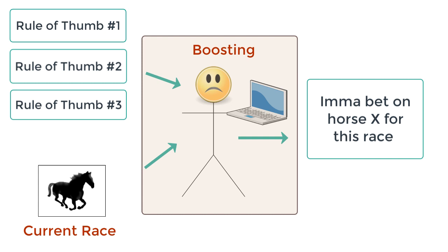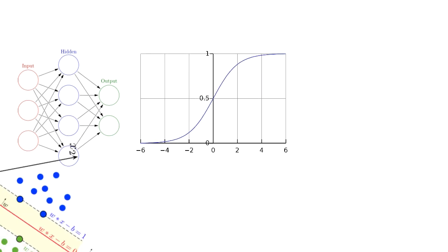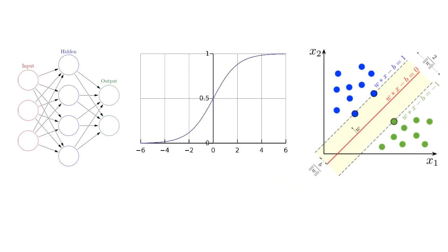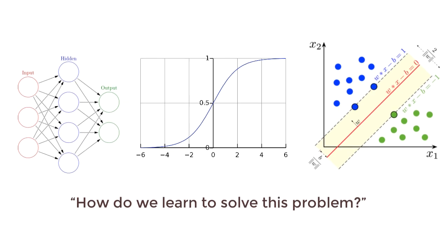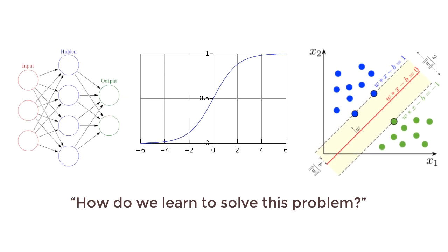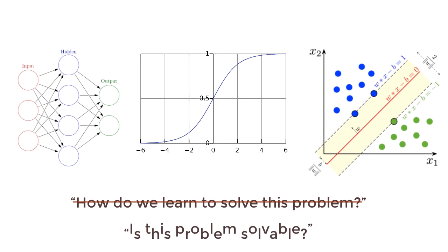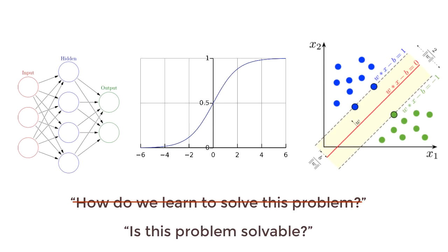But how is this possible? I want to take a step back and segue back into this real soon though. Neural networks, logistic regression, support vector machines, all of these models answer the question, how do we learn to solve this problem? But a question that we should actually ask before this is, is this problem learnable? Or is this problem solvable?